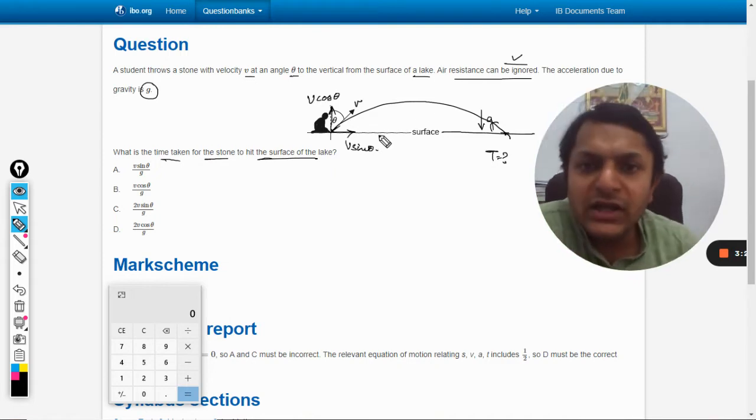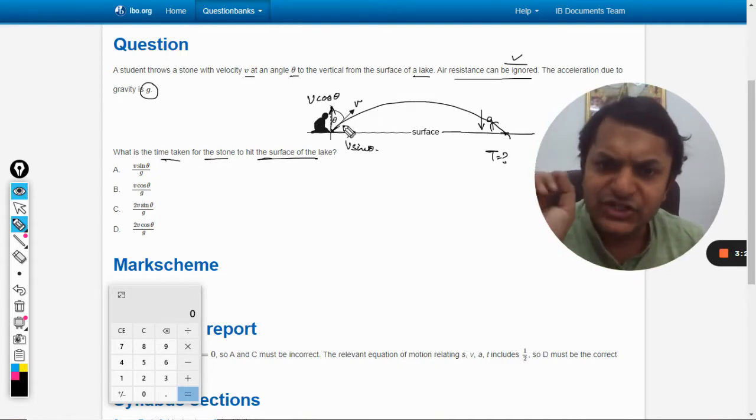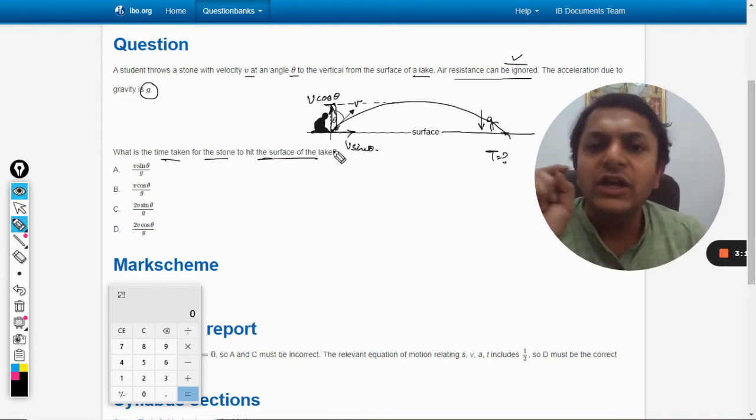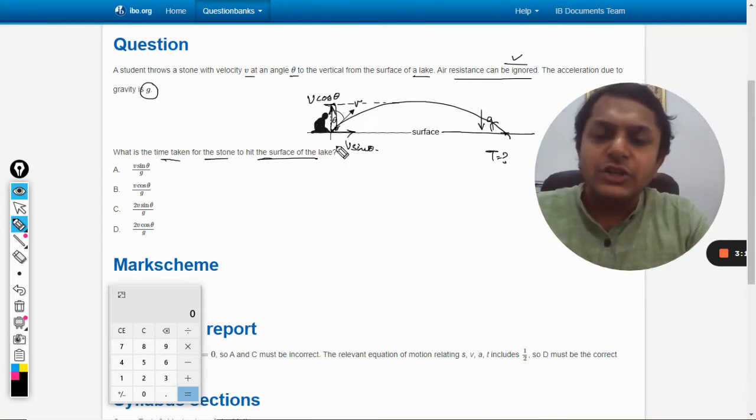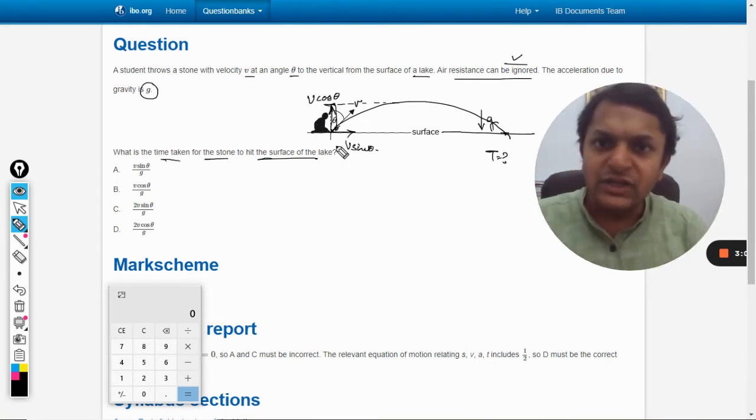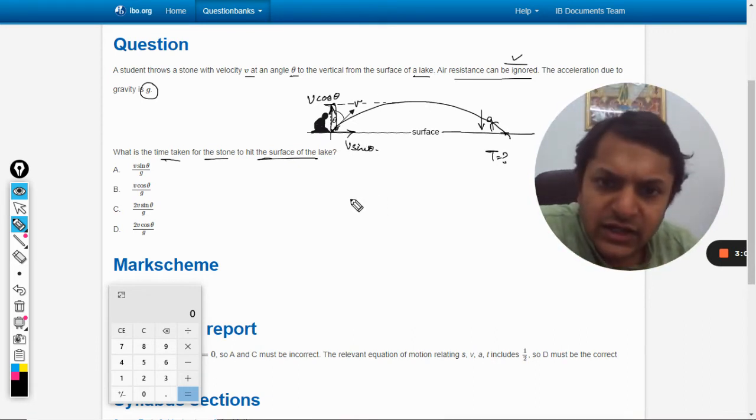Now concentrating only on the vertical motion of the ball—it is going up, reaching the highest point, and from here it is going down. So we are just concerned with the vertical motion. We will neglect the horizontal motion and concentrate only on the vertical motion. The velocity is v cos theta, so here we can find s = ut + 1/2 at².